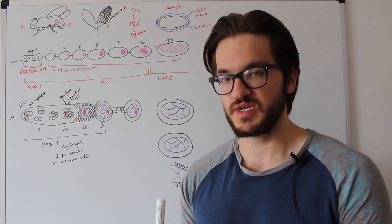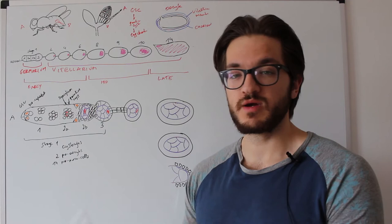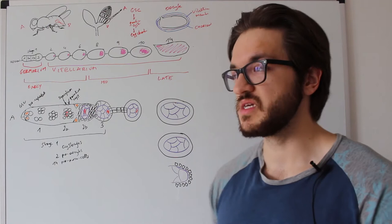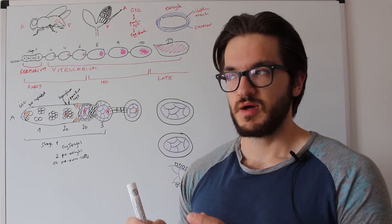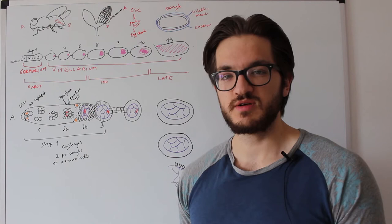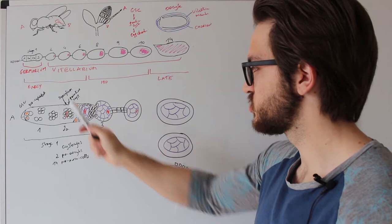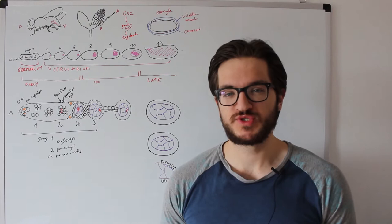Nurse cell dumping is basically that all the RNA, proteins, and organelles are shipped into the oocyte much quicker than before, and nearly the whole cytoplasm of these nurse cells is dumped into the oocyte within 30 minutes, which is really quick compared to the whole oogenesis taking 10 days. At the end of nurse cell dumping, all fifteen nurse cells will die by apoptosis, so the only remnant of the sixteen-cell germline cyst is the one oocyte.